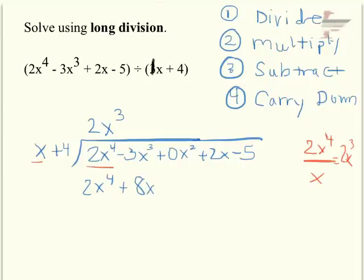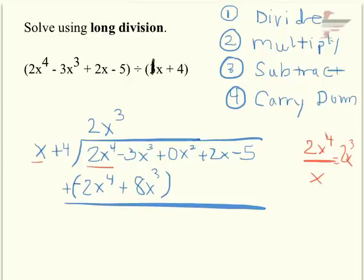Then we subtract — this is the tricky step where mistakes usually happen. What I do is change this to plus and carry a negative all the way through, so 2 minus 2 cancels out, and negative 3 minus 8 is negative 11x cubed. Then we carry down the next term, which is 0x squared, and now I'm back to dividing again.